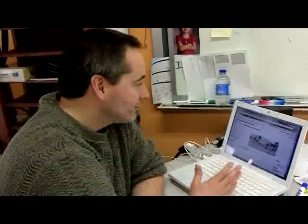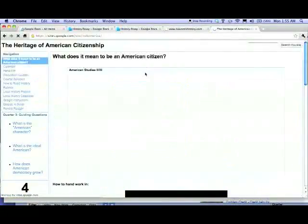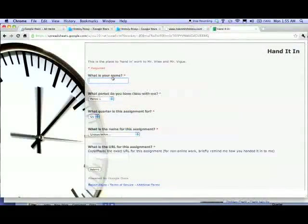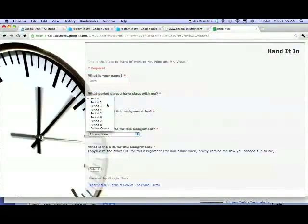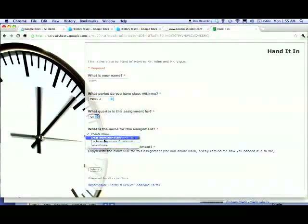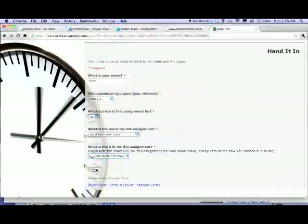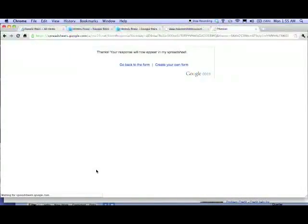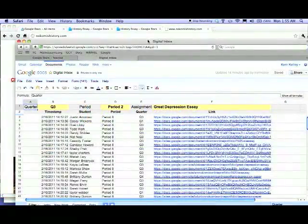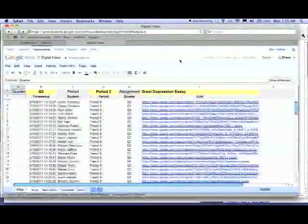Here is an example of the class website. The students would come in here and click on the Handed In Form. When this comes up, they would input their name, time of the class, and here would be the URL from a published document or a published PowerPoint. When they hit submit, that goes to my Google Docs account and I get this form.